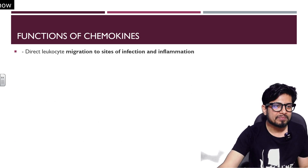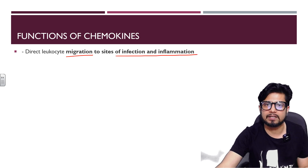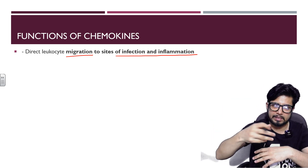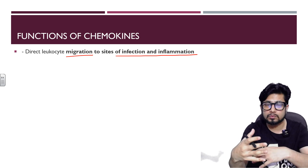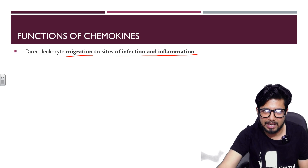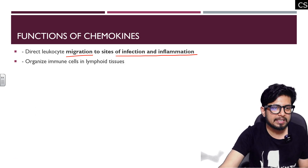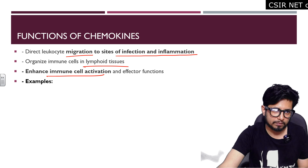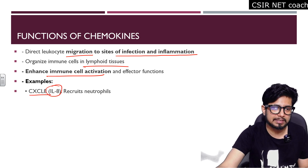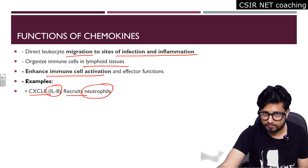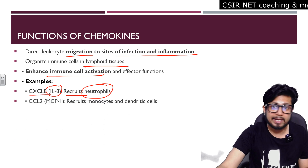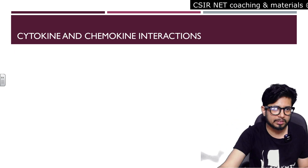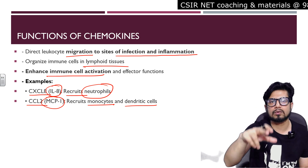The primary function of chemokines is to direct leukocyte migration to the site of infection and inflammation. A damaged tissue releases chemokines, and in response immune system cells migrate toward that affected tissue. For example, CXCL8 (also known as IL-8) recruits neutrophils to the area of damage or infection, and CCL2 (also known as MCP-1) recruits monocytes and dendritic cells to the site of infection.